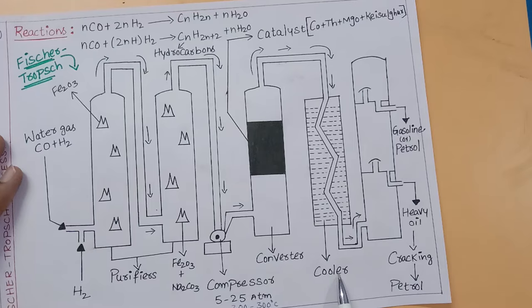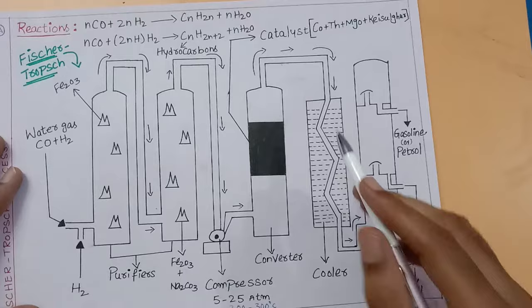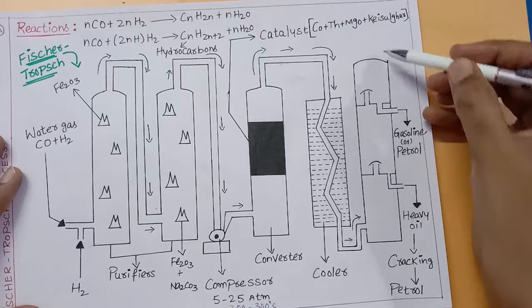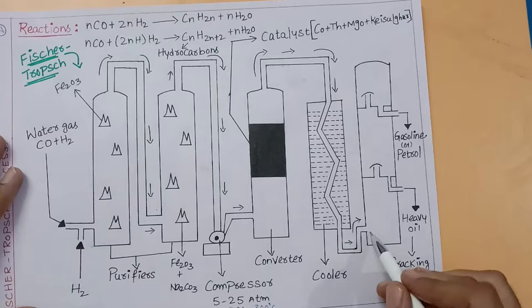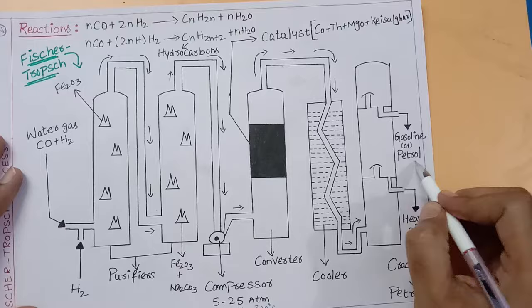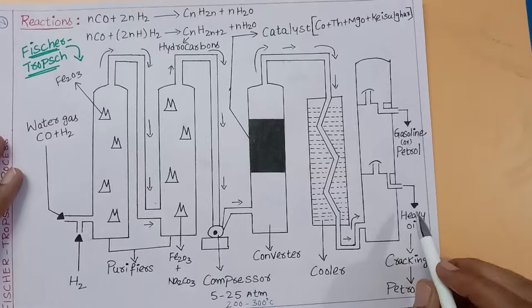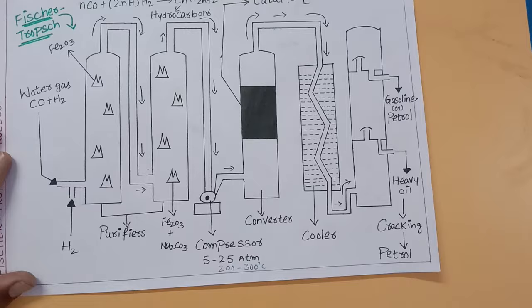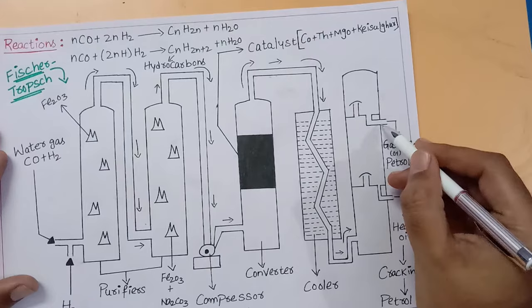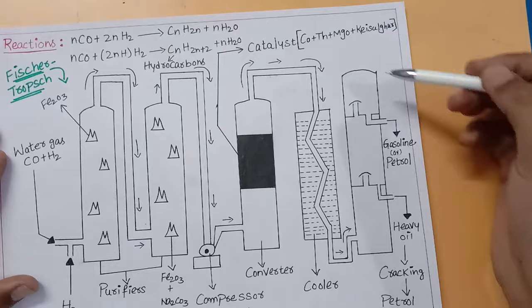The catalyst uses cobalt, thorium, magnesium, and Kieselguhr. These elements can be combined to make the catalyst. The hydrocarbons that are produced in the converter column are passed through another column that is the cooler, which cools down the vapors. Then the hot vapors are sent into the last column called the fractionating tower. In the fractionating tower, heavy oil forms. In these hot vapors, heavy oil and gasoline or petrol are present. First, heavy oil separates as a liquid, then you collect gasoline or petrol in the fractionating column.